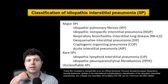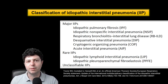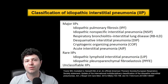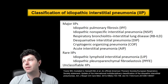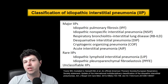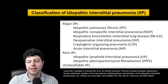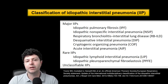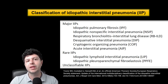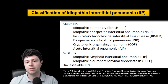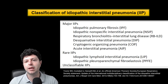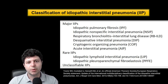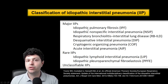Unclassifiable IIPs are cases where we can't find the box — we don't know the cause and it doesn't fit the criteria for any of the others. These generally require a lot of workup; they might require a lung biopsy or many investigations to determine the best course of action, or we may follow the disease behavior closely.